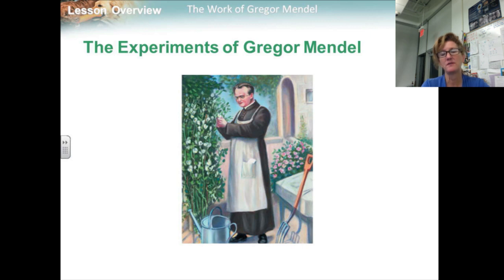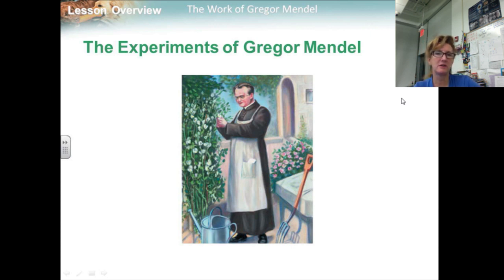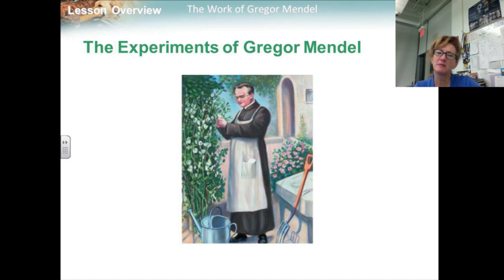The modern science of genetics was founded by an Austrian monk named Gregor Mendel, this gentleman right here. Mendel was in charge of the monastery garden, where he was able to do the work that changed biology forever. Mendel carried out his work with ordinary garden peas, partly because peas are small and easy to grow, and a single pea plant can produce hundreds of offspring.